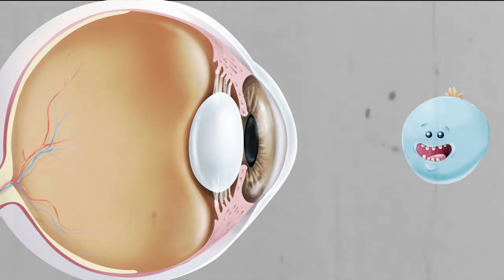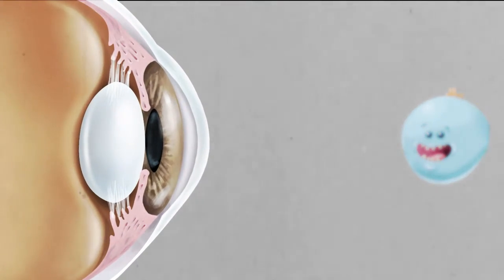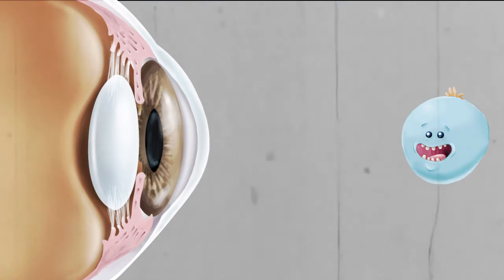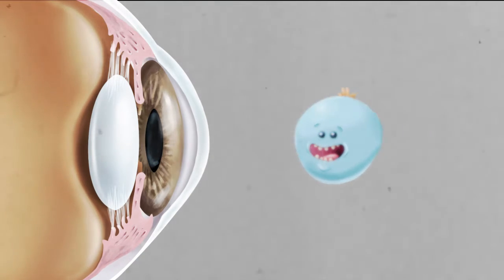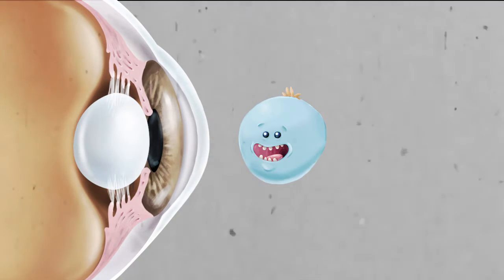However, to do this, the lens must adjust its shape to properly focus. That's when those muscles come in. When focusing on an object far away, the ciliary muscles are relaxed and the zonules are tensed. When focusing on a nearby object, the ciliary muscles are tensed and the zonules are relaxed to compress the lens and increase its curvature. This is called lens accommodation.